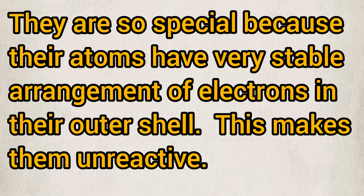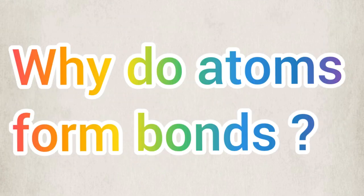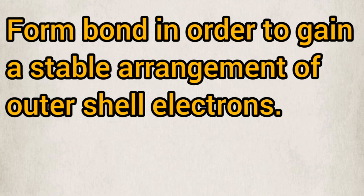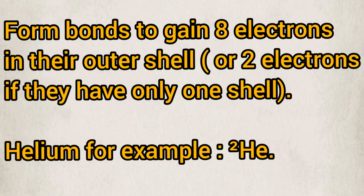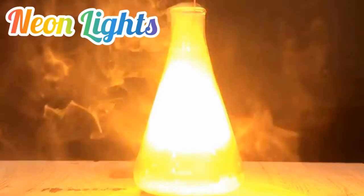This brings us to the answer to our question: why do atoms form bonds? Atoms form bonds in order to gain a stable arrangement of outer shell electrons. In other words, they form bonds to gain eight electrons in their outer shell, or two electrons if they have only one shell. For example, helium only has two electrons.